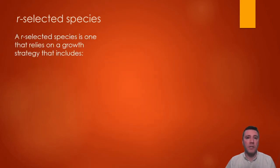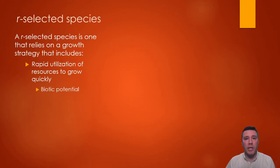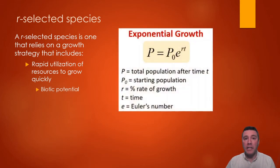An R-selected species is one that has directly contrasting characteristics to a K-selected one. R-selected species reproduce quickly by taking in nutrients from their environment, allowing their population to grow rapidly. When resources are abundant, they reproduce at their maximum biotic potential, exponentially. This essentially means that they are reproducing at the fastest possible rate for them, and the R in R-selected is the same R as this variable in the exponential growth equation.